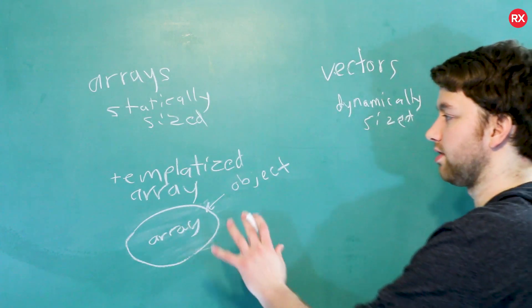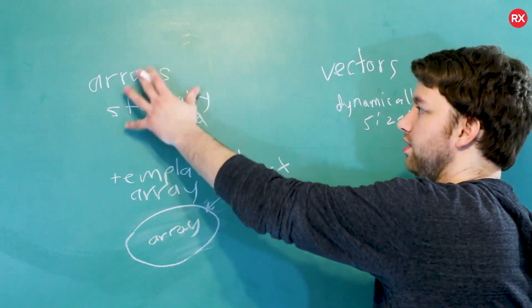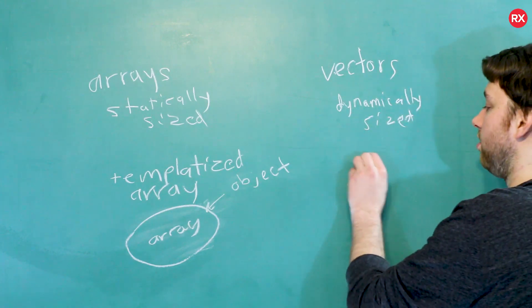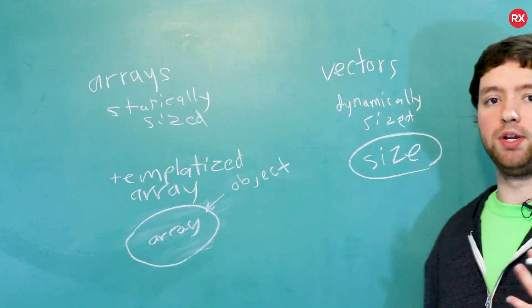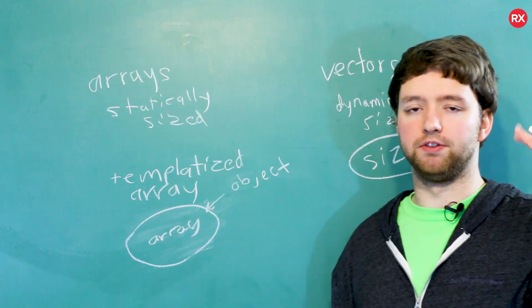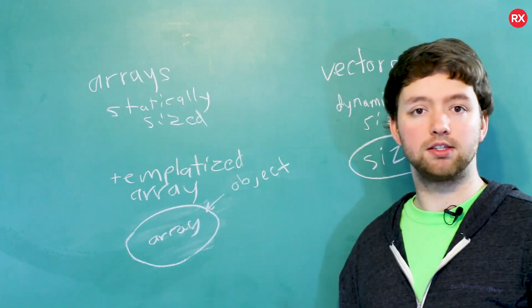Specifically, it allows us to keep track of the size of the array, which is a little bit more difficult with a standard array. And that's another capability of vectors. This thing knows its size, meaning it understands how many elements it has. Arrays do not have any knowledge of their size. So you have to go through a little bit of extra work to calculate their size.